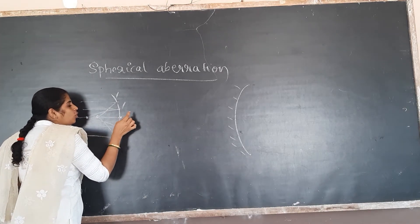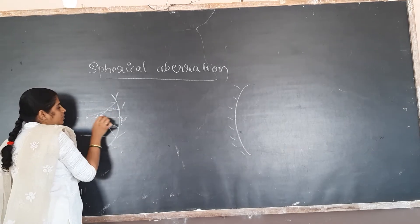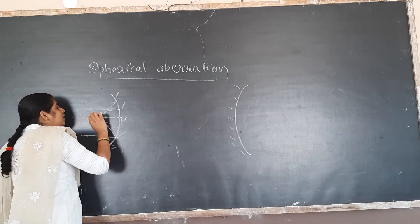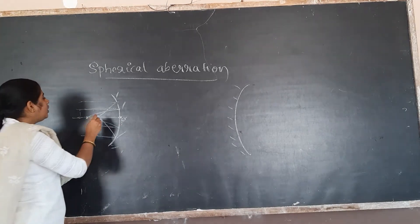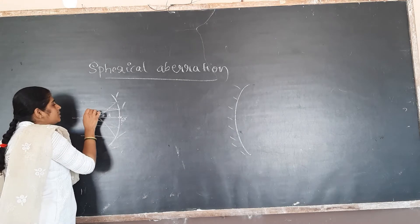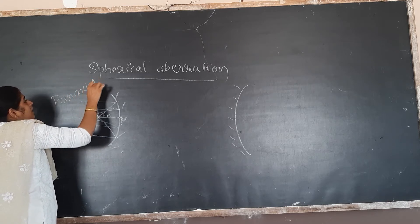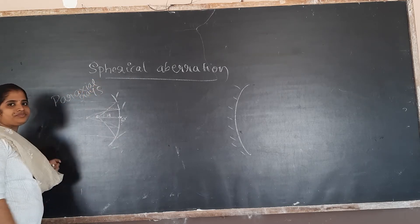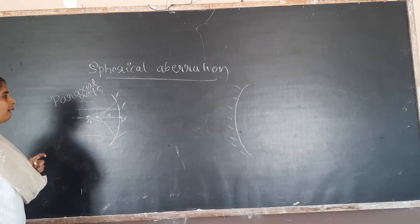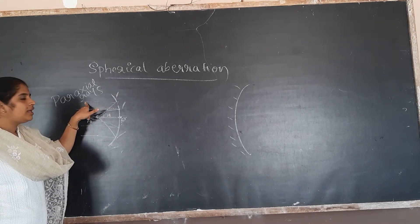Near to the pole you will get the focus for marginal rays. When we consider rays which are nearer to the principal axis — paraxial rays — the bending will be less. So the focus for marginal rays is called FM, and the focus for paraxial rays is called FP. The marginal rays focus will be near to the pole, while the paraxial rays give a point focus farther away.